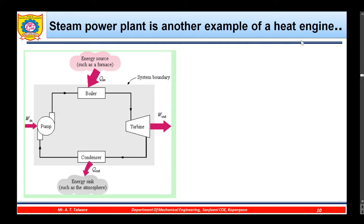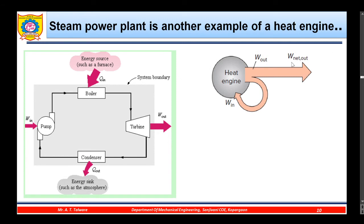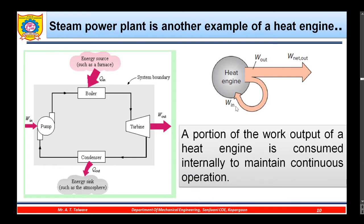Another example is the steam power plant. Water is converted into steam by supplying heat; the steam expands in the turbine to produce W_out. The steam is then condensed — converted to liquid state — in the condenser by rejecting Q_out. A pump increases the pressure from low to high by taking W_in. The thermodynamic cycle is completed. The W_net output is W_out minus W_in. A portion of the work output of a heat engine is consumed internally to maintain continuous operation.